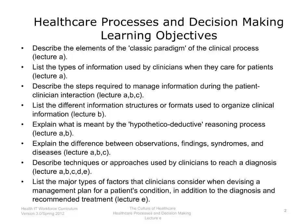The objectives for health care processes and decision-making are to: describe the elements of the classic paradigm of the clinical process; list the types of information used by clinicians when they care for patients; describe the steps required to manage information during the patient-clinician interaction; list the different information structures or formats used to organize clinical information; explain what is meant by the hypothetico-deductive reasoning process; explain the differences among observations, findings, syndromes, and diseases; describe techniques or approaches used by clinicians to reach a diagnosis; and list the major factors that clinicians consider when devising a management plan for a patient's condition, in addition to the diagnosis and recommended treatment.